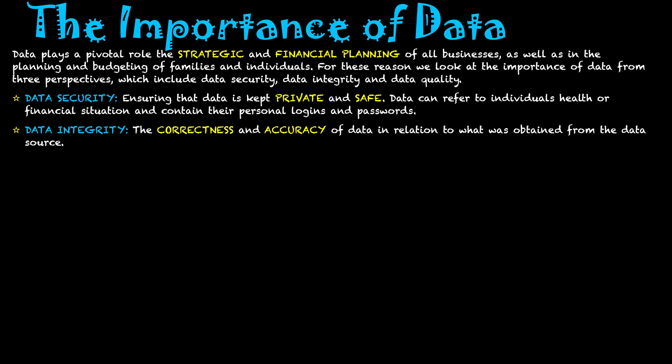Secondly is data integrity, which is the correctness and accuracy of the data in relation to where it was obtained from a source. When users enter their data into the system, we have validation and verification techniques being used to ensure that when data goes into the system, it is correct and accurate. We verify this year-to-year and update it, ensuring that the records stored in our systems stay correct over time.